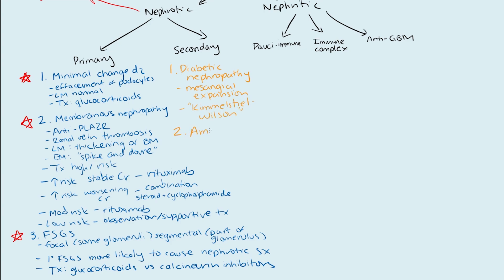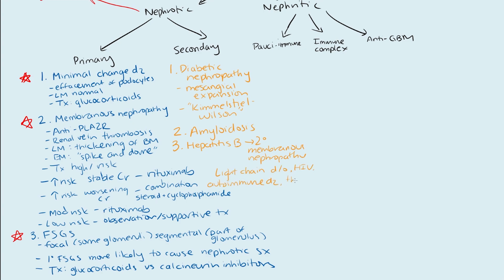Another cause is amyloidosis — you're going to see apple green birefringence on Congo red staining. Then there's secondary membranous nephropathy, where the big risk factor is hepatitis B. There are also many other causes of secondary membranous nephropathy: light chain disorders, HIV, autoimmune diseases, thyroiditis, carcinomas, and medications like NSAIDs. If your patient has hepatitis C, this could lead them to develop membranoproliferative glomerulonephritis.